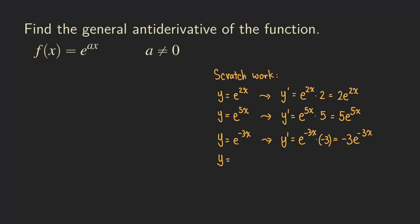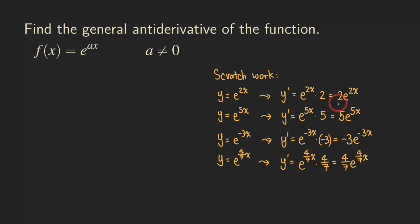Let's try a fraction in front of the x. Let's say we have e to the 4 over 7 times x. When we differentiate, we get y prime equal to e to the 4 over 7 x, times 4 over 7, so we have 4 over 7 times e to the 4 over 7 x.